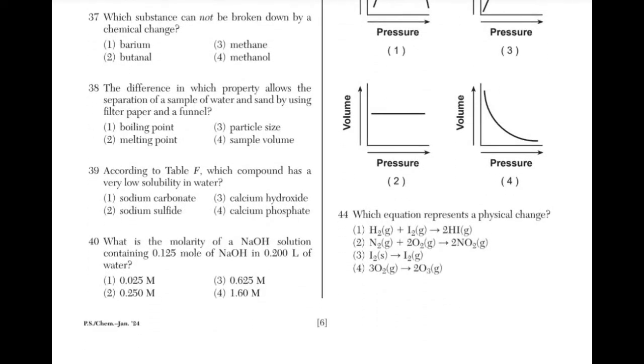Which substance cannot be broken down by a chemical change? The answer is choice 1 because barium is an element. All the other answer choices are compounds, which means that they can be broken up by a chemical change.